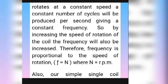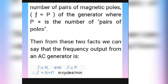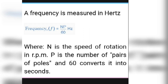For a simple single coil generator, the number of pairs of magnetic poles also affects frequency: F is proportional to P, where P is the number of pairs of poles. Combining these two facts, the frequency output from an AC generator is: F = N × P in cycles per minute. Since frequency is measured in Hertz, the full formula is F = (N × P) / 60, where N is the speed of rotation in RPM, P is the number of pairs of poles, and 60 converts minutes into seconds.